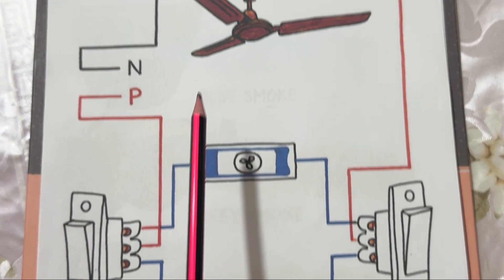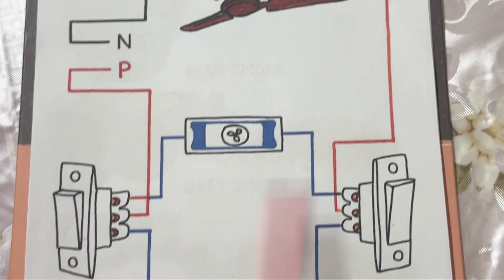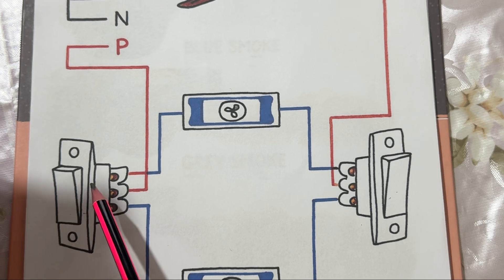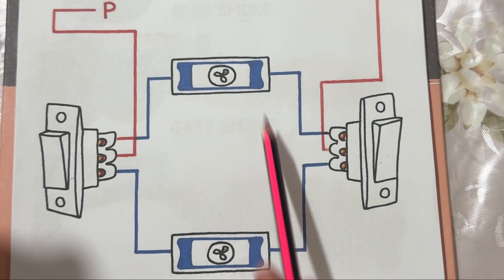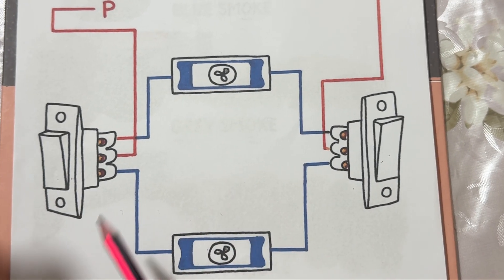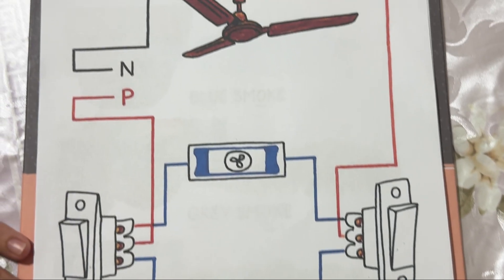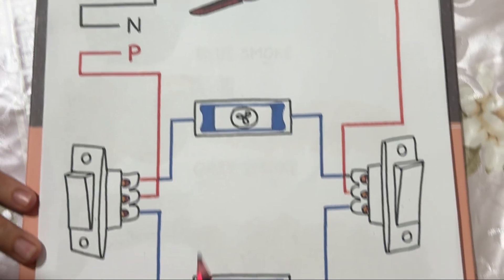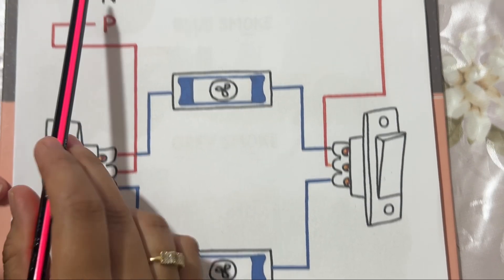Here's how it works: power flows from the phase line into the selected switch. From the switch, current passes through the regulator. The regulator adjusts the fan speed. Finally, current flows to the fan motor and completes the circuit with the neutral wire.